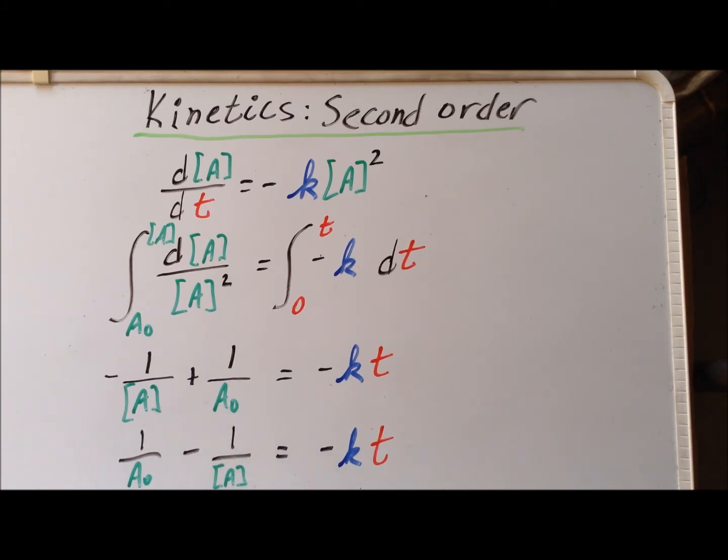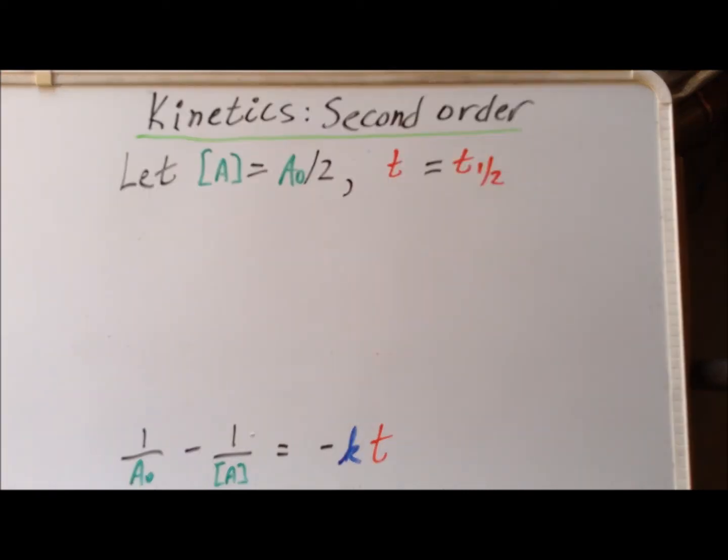In our next step, we are now going to calculate the half-life for a second-order reaction. By the definition of the half-life, at the half-life, the concentration of A is equal to the initial value, A₀ divided by 2, half of what it was. And the time is the half-life time when this occurs.